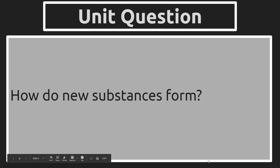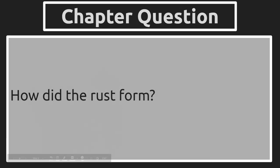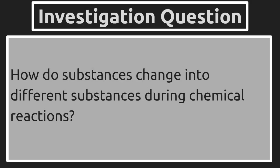A reminder that our unit question is still: how do new substances form? Within that bigger question, how did the rust form? In this lesson we really get to explaining how that happens. The investigation question is: how do substances change into different substances during chemical reactions? That will be part of the explanation of how the rust formed.